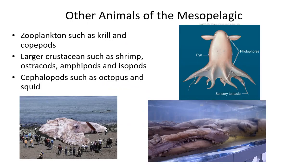Other animals of the mesopelagic include zooplankton, large crustaceans, and cephalopods such as octopi and squid. This is where giant squid are proposed to live — we know they are there and have some specimens, but we don't have much information about them. Sperm whales often dive to this depth to hunt squid and possibly giant squid.